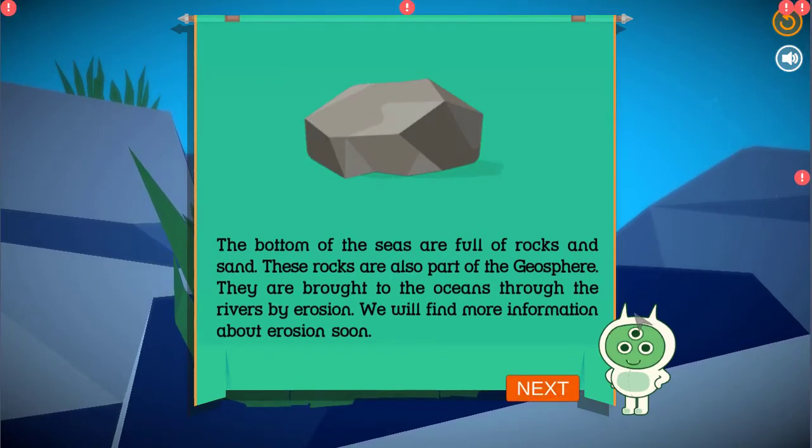The bottom of the seas are full of rocks and sand. These rocks are also part of the geosphere. They are brought to the oceans through the rivers by erosion. We will find more information about erosion soon.